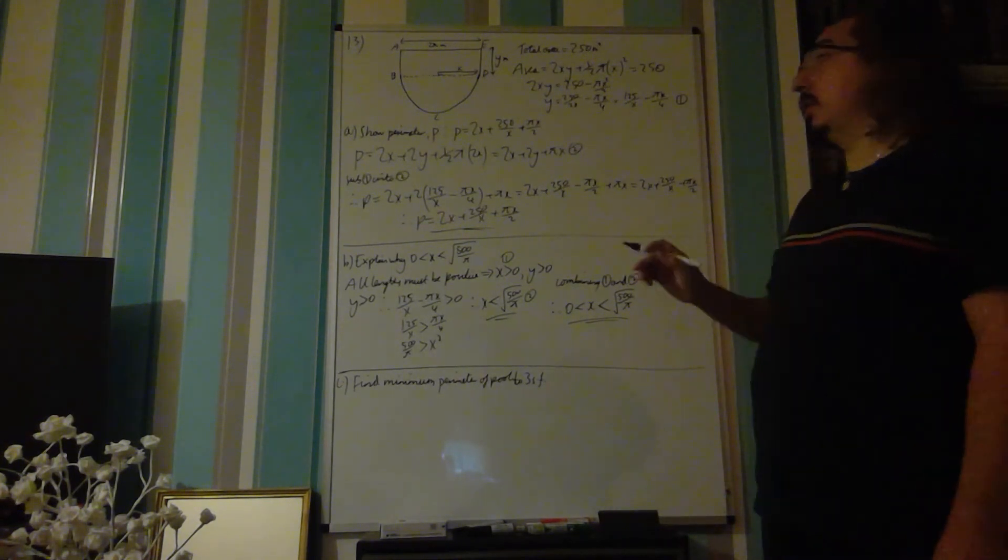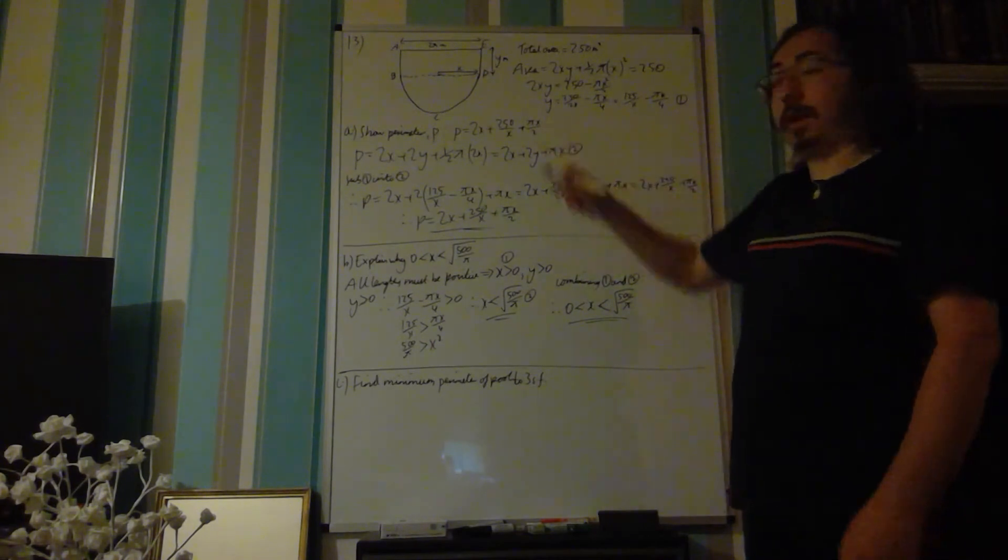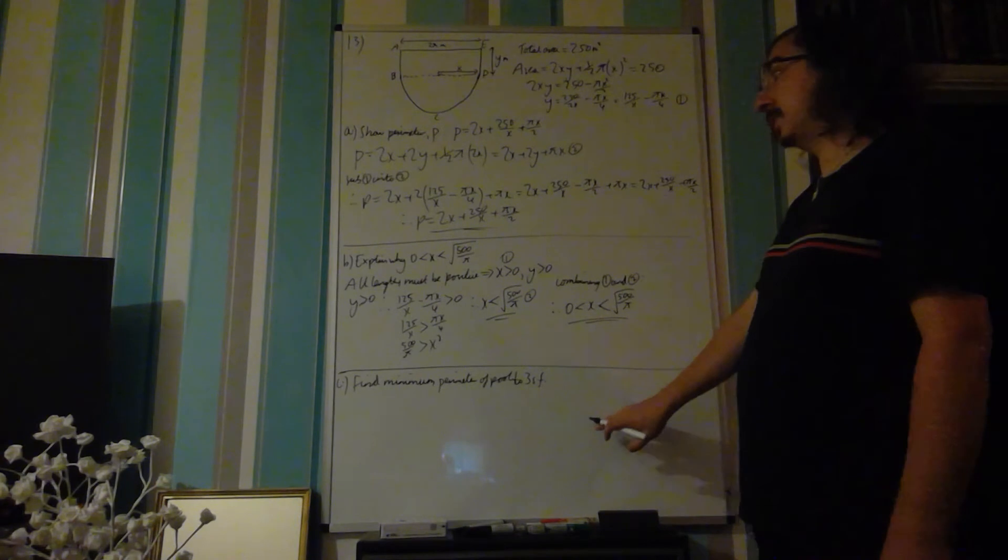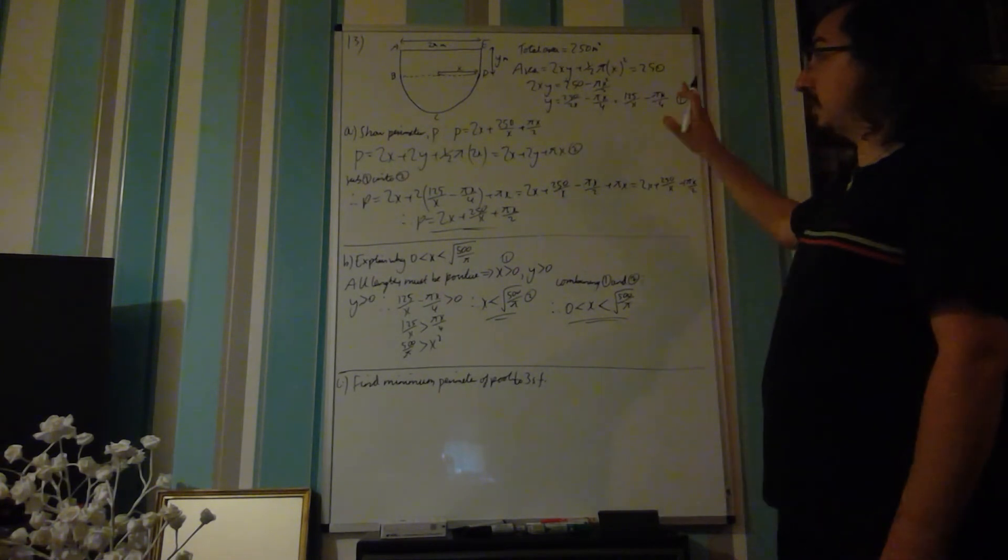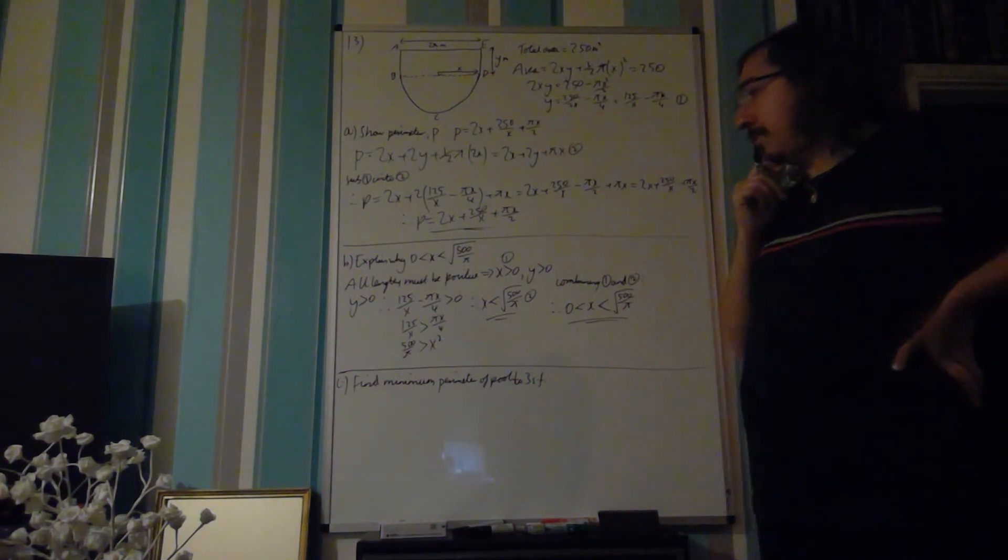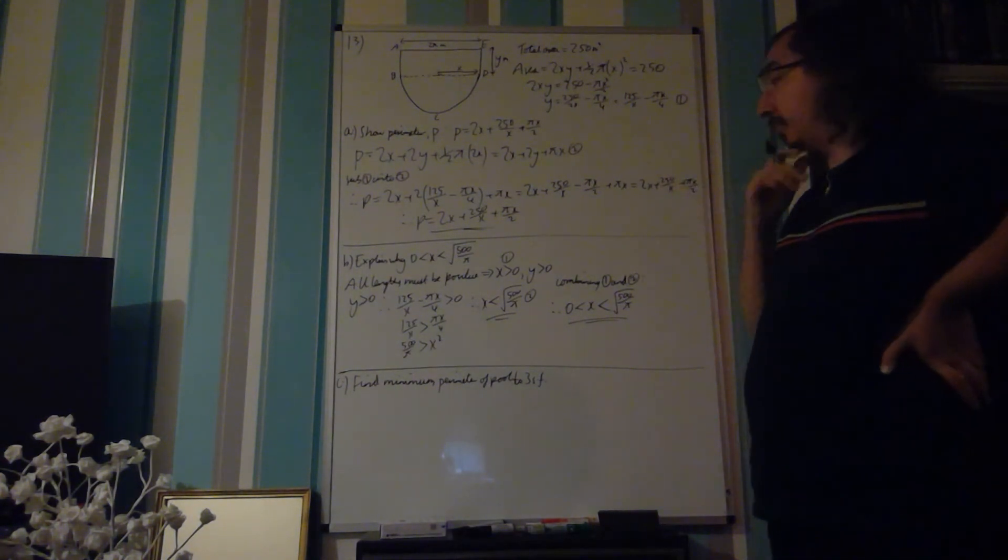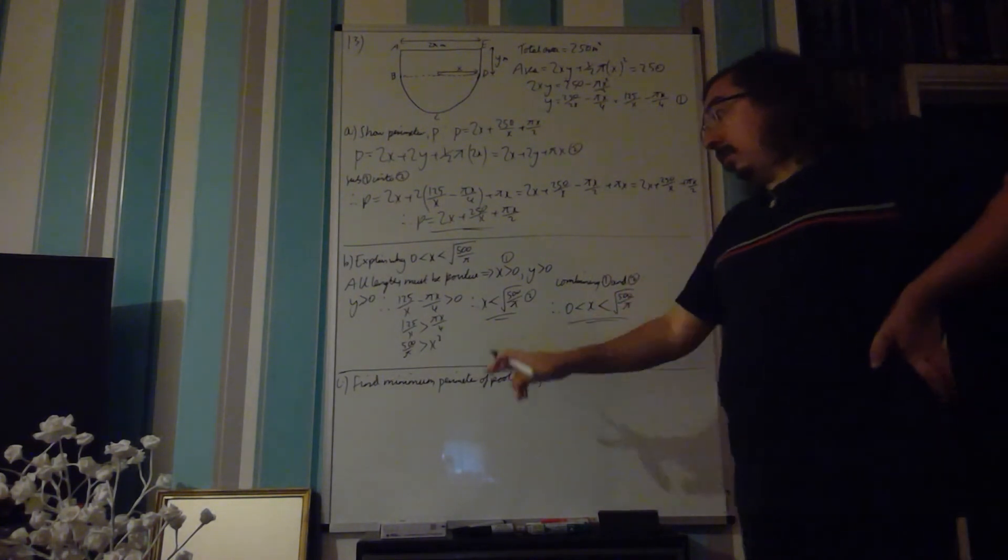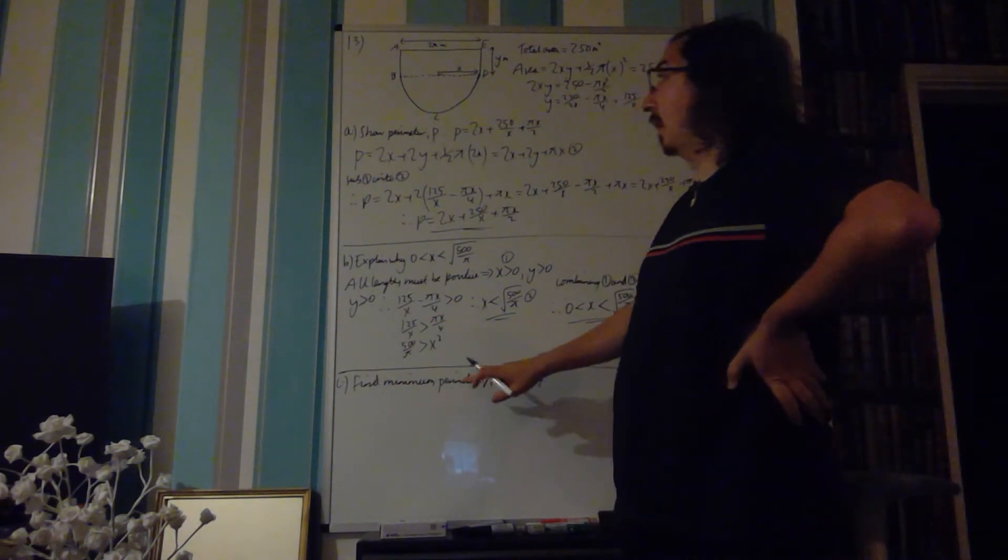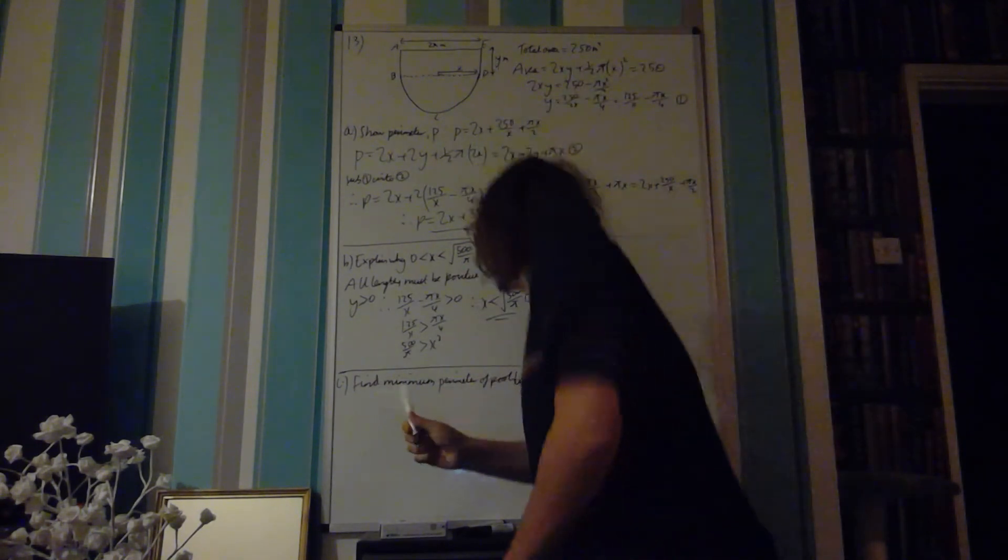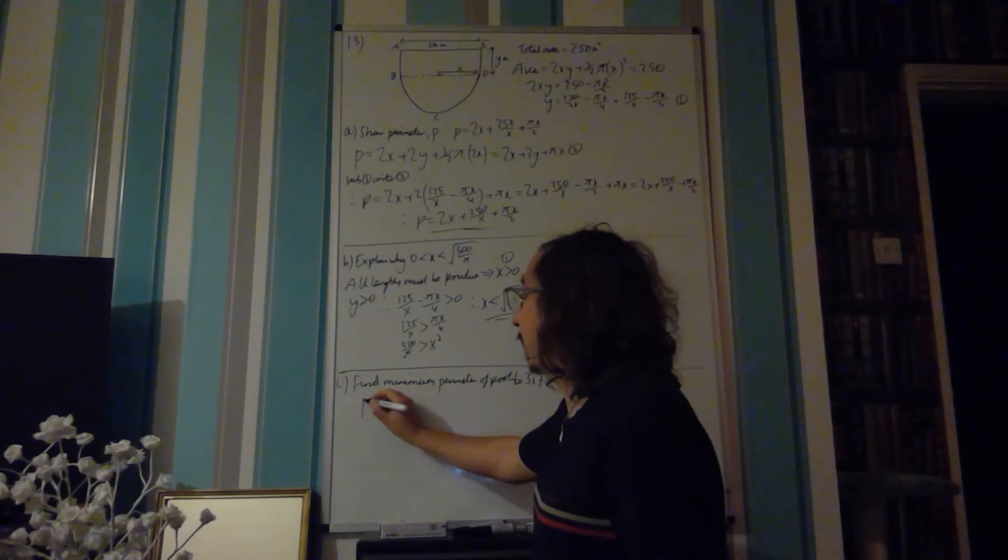Part C, however, is reliant on the actual formula they give you in case you don't get it. So you can get all the marks for C even if you've messed up in parts A and B. Because part C asks you to find the minimum perimeter of the pool to three significant figures. Well, if we want a minimum and we're looking at the perimeter, it must be the perimeter formula. And let's rewrite this because we don't really like it in this form.